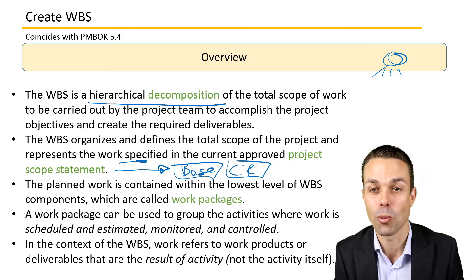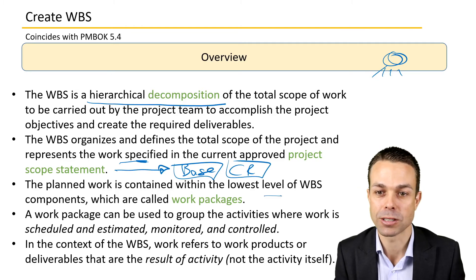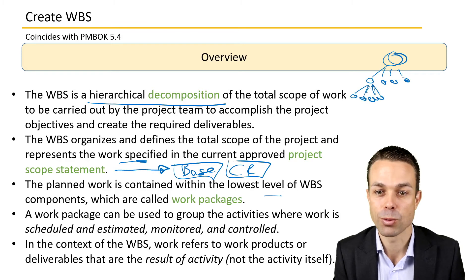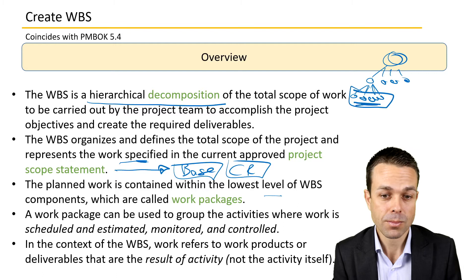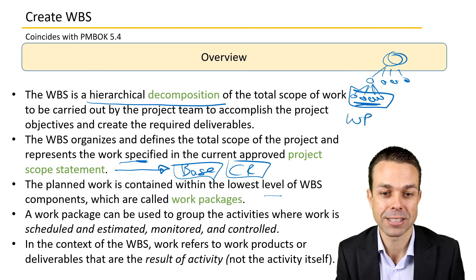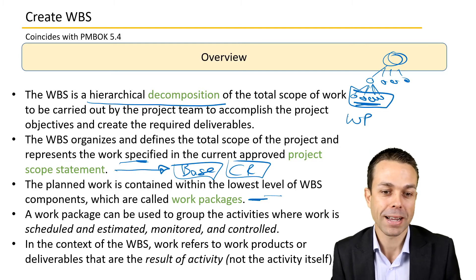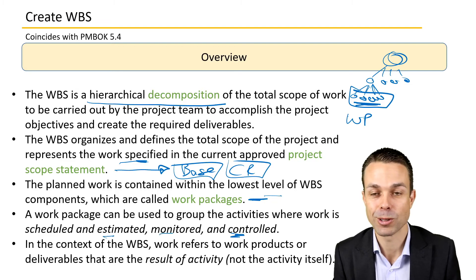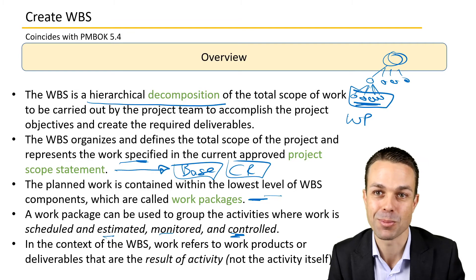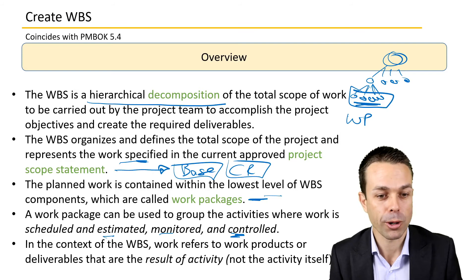Don't forget that the scope statement needs to go through a change request if we have a change once it's been baselined. The planned work is contained within the lowest level of the Work Breakdown Structure — we might break it down several levels, and the actual planned work sits at the lowest level. These are called work packages, which we'll be assigning to teams to complete. The work package can be used to group activities where work is scheduled, estimated, monitored, and controlled, feeding into all our other project management processes.